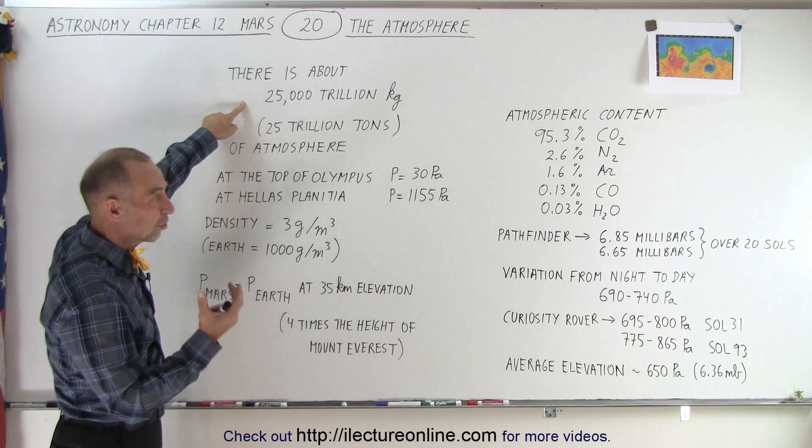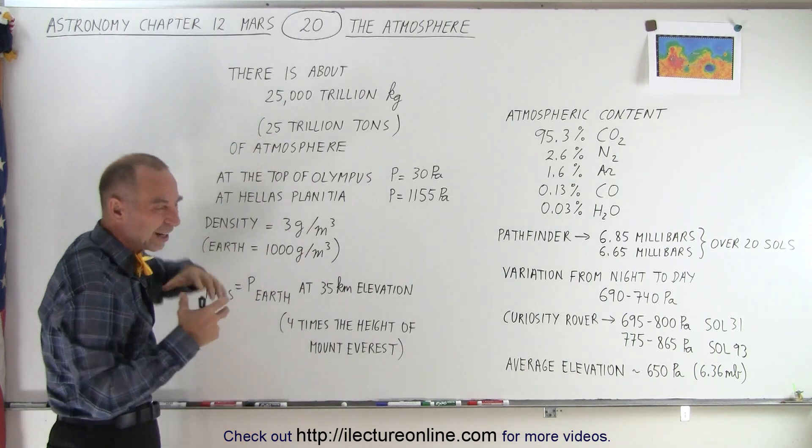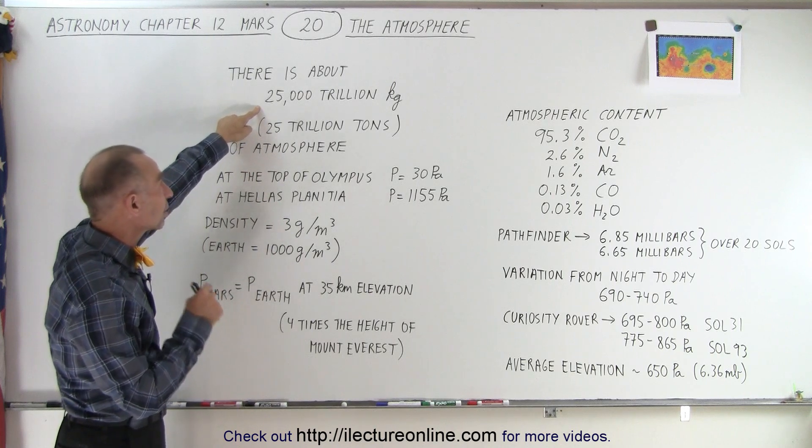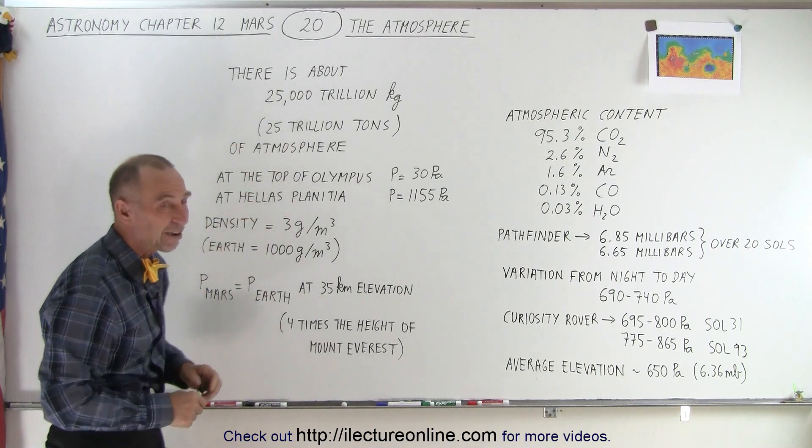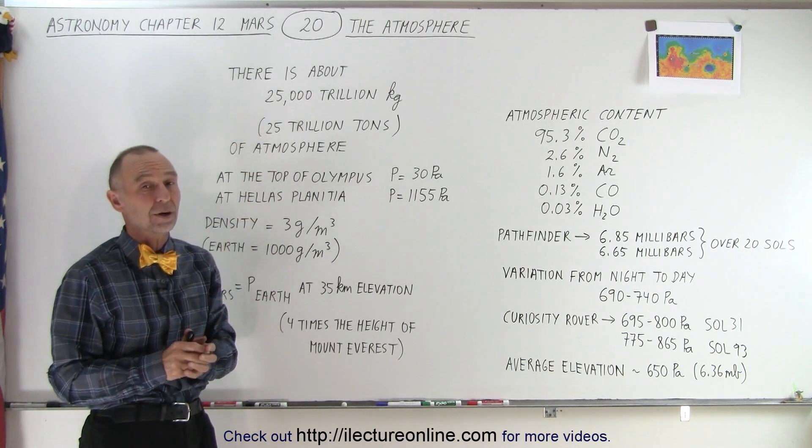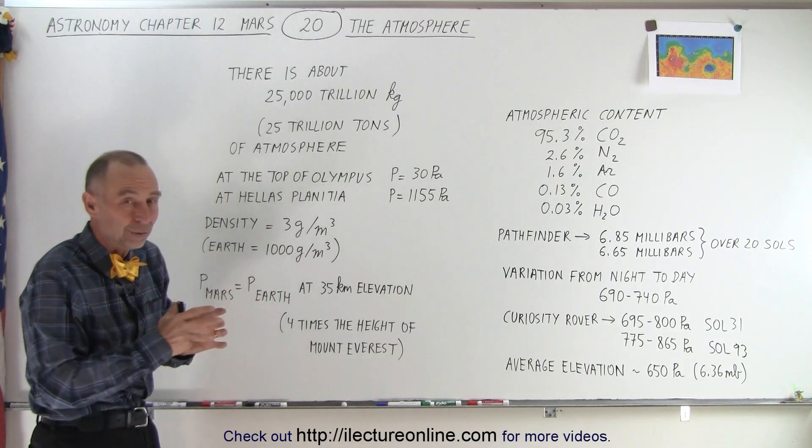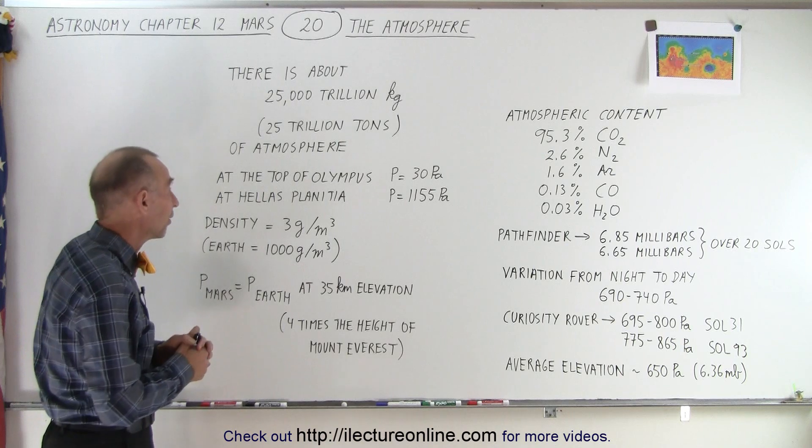Now, even though there's such low pressure, and there's not as much compared to the Earth, there's still 25,000 trillion kilograms, or 25 trillion tons of atmosphere on Mars. So there's still a fair amount of atmosphere there, but of course, compared to Venus and Earth, it's far less.